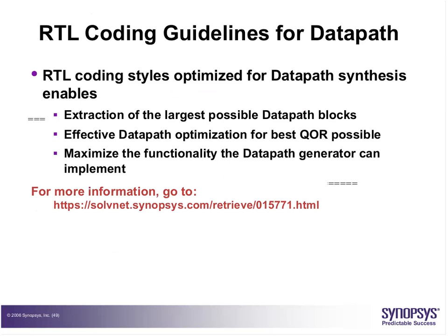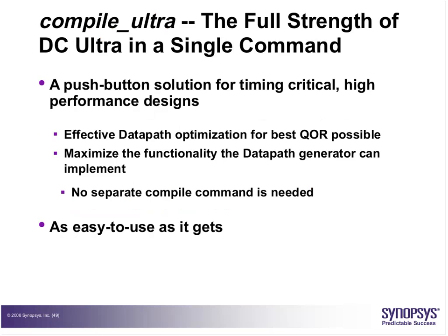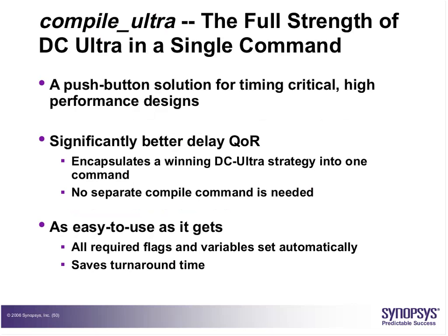RTL coding guidelines say that you should code RTL such that extraction of a data path block is possible, because it leads to the best QoR. Now, compile ultra was introduced in two steps: first DC gave a command for ultra optimization by setting a parameter to true and then adding the compile command. Later, the combined compile ultra command contains all the functionality of DC ultra.